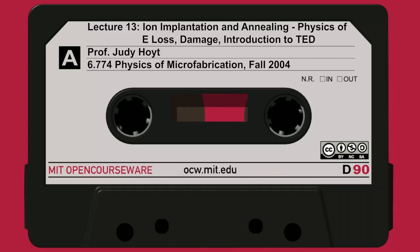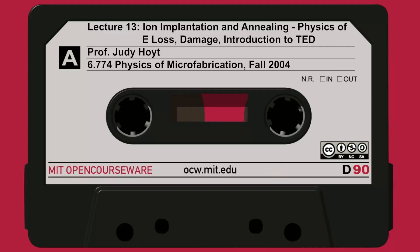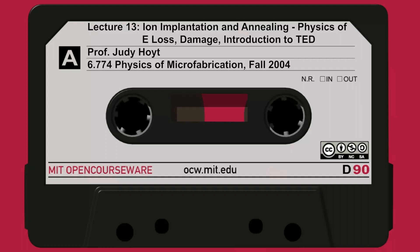We're bombarding the wafer. The energy of this incoming ion is typically anywhere from about 1 kilovolt — some of the lowest energy implants being done today — to maybe even slightly less. Some of the highest energy implants for making selectively implanted collector regions in bipolar can work in the 1 MeV range. So there's a very wide range. Typically, implants are between something like 10 to 100 kV, but people do use the full range.